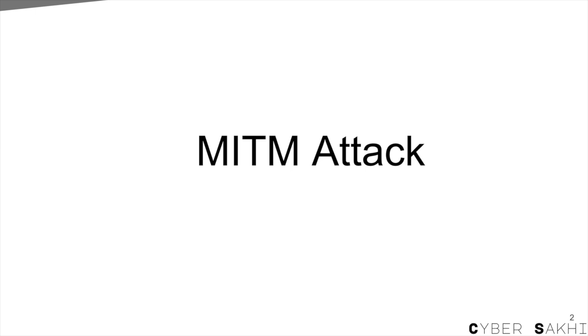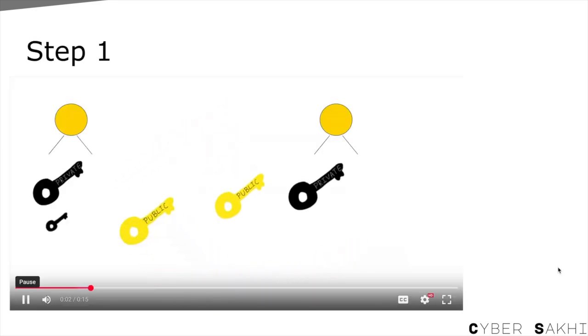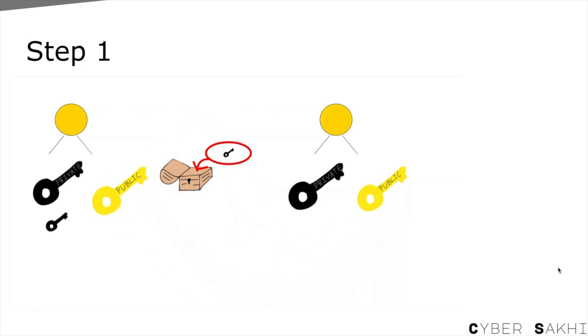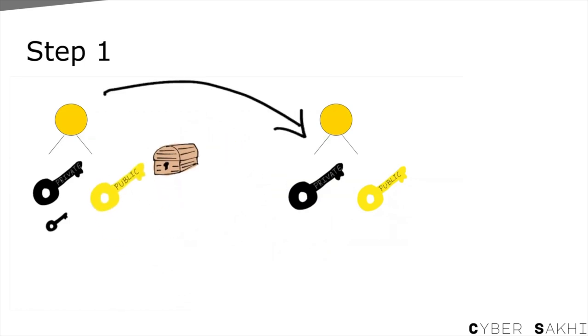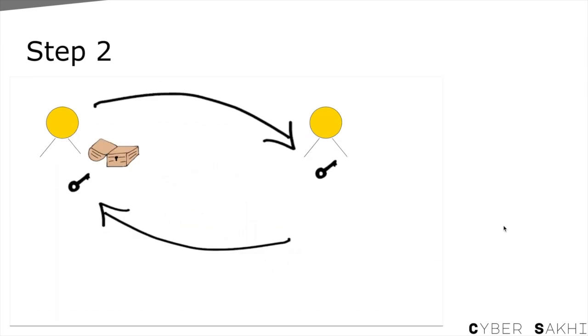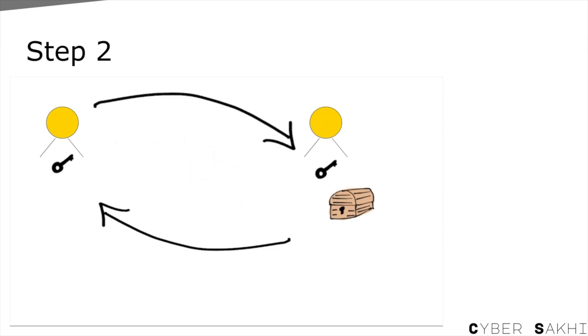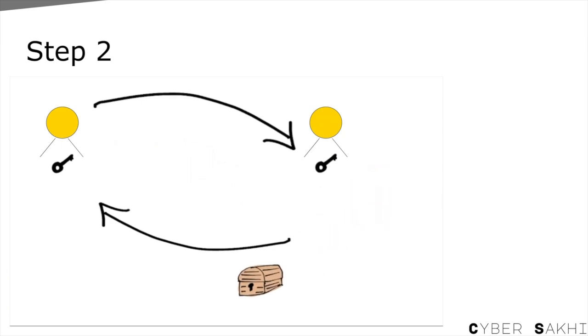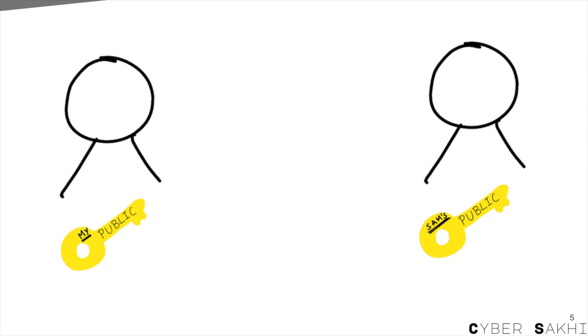Man in the middle attack. You and Sam want to chat securely. Here's the plan. Step 1: use asymmetric encryption — public and private keys — to safely share a symmetric key. Step 2: use that symmetric key to encrypt your actual messages. Simple, right? But there's a huge problem. Let's break it down.